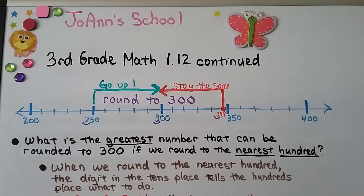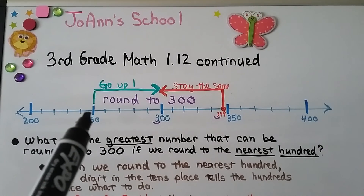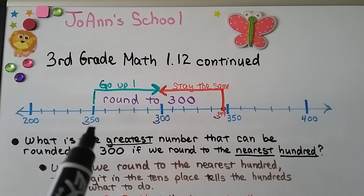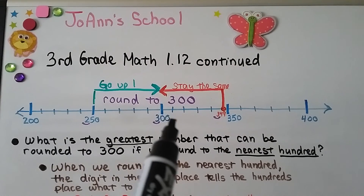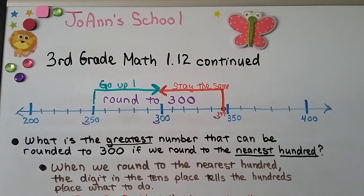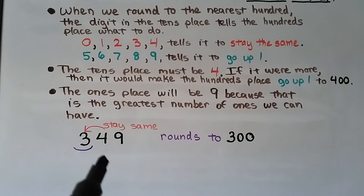The least number that rounds to 300 would be 250. If we went back to 249, the 4 would tell the 2 to stay the same and it would round to 200. So any number between 250 and 349 would round to 300. 349 would be the greatest number that can be rounded to 300 when we round to the nearest hundred.